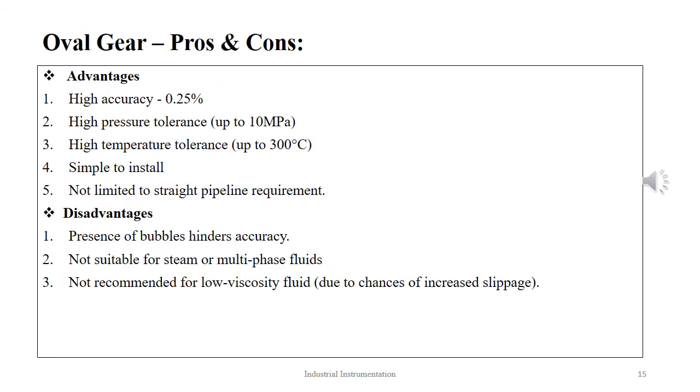The advantages of the oval gear meter are: very high accuracy ±0.25%, very high pressure tolerance up to 10 MPa, very high temperature tolerance up to 300 degrees Celsius, simple to install, and not limited to straight pipeline requirement.